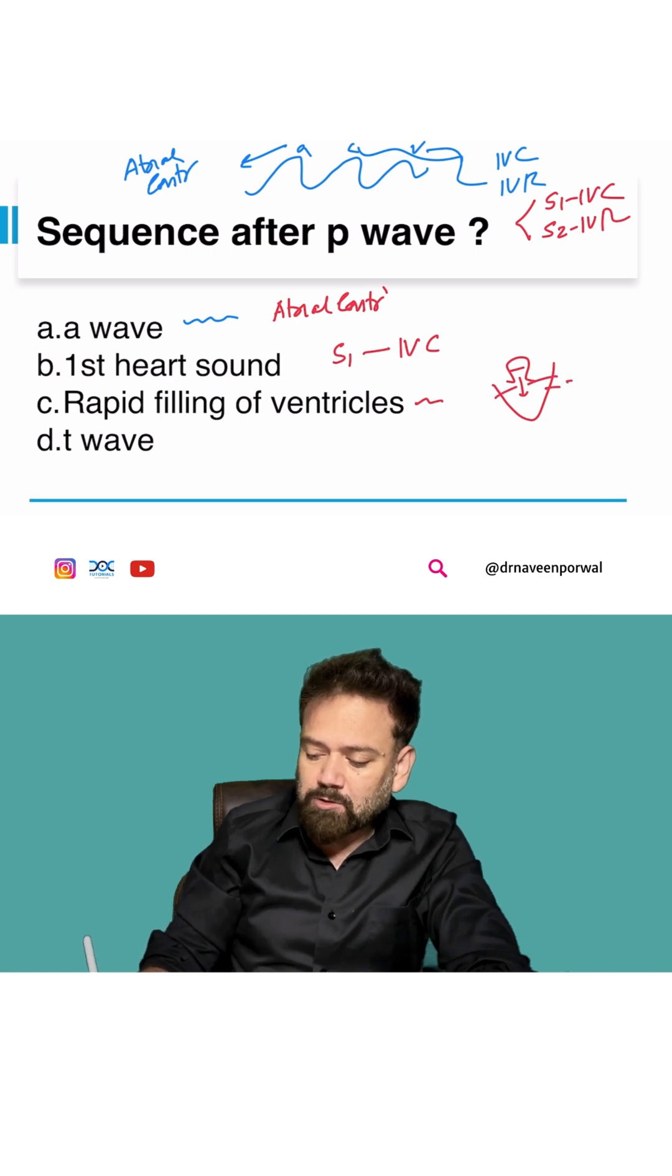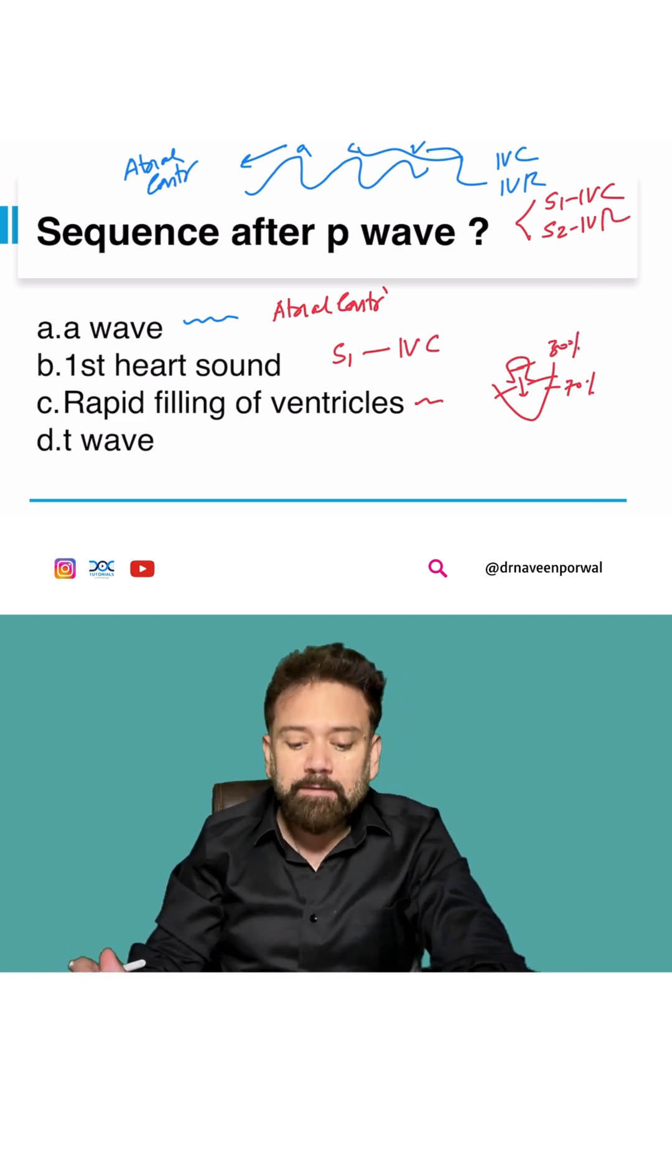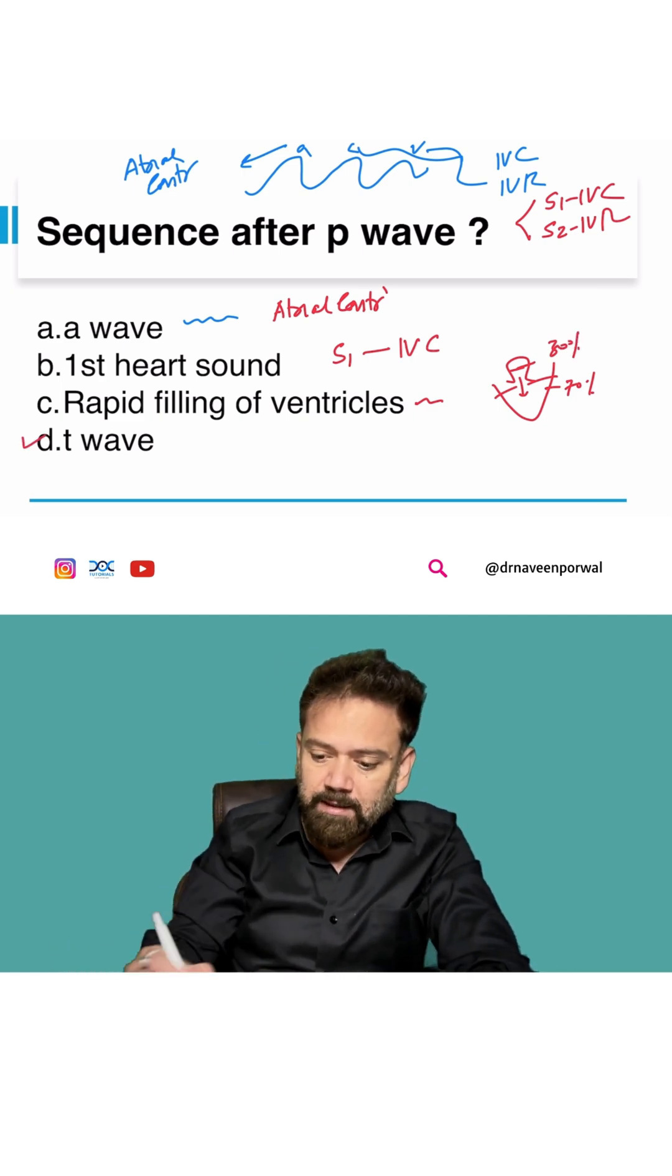70% is because of passive filling, 30% is because of atrial contraction. Then T waves.